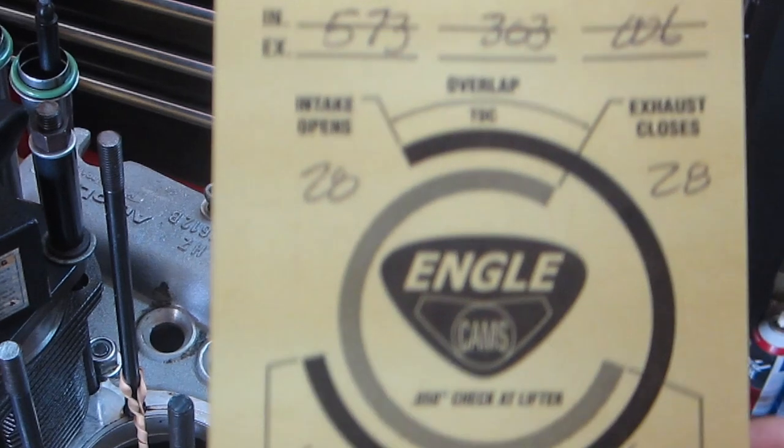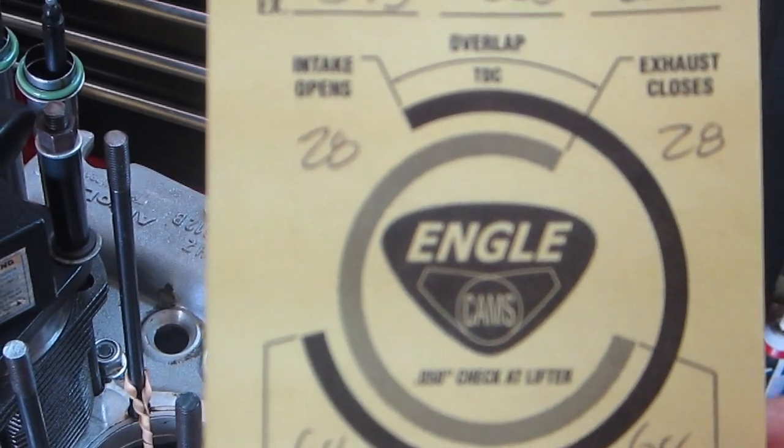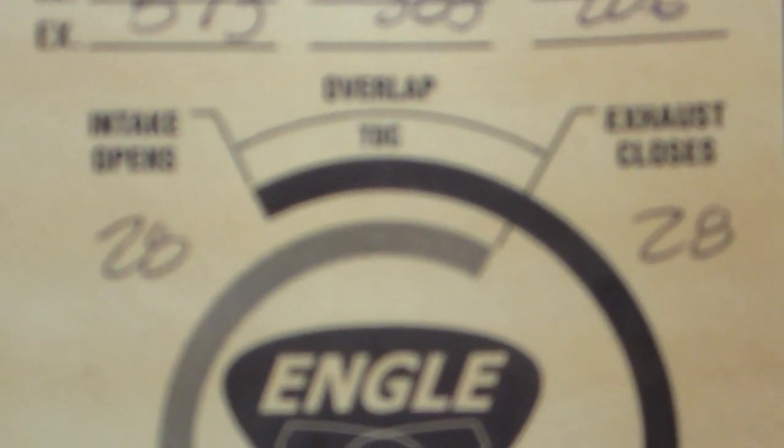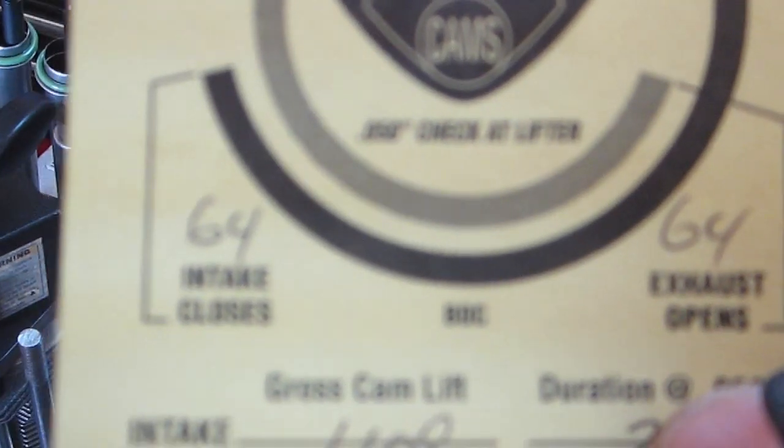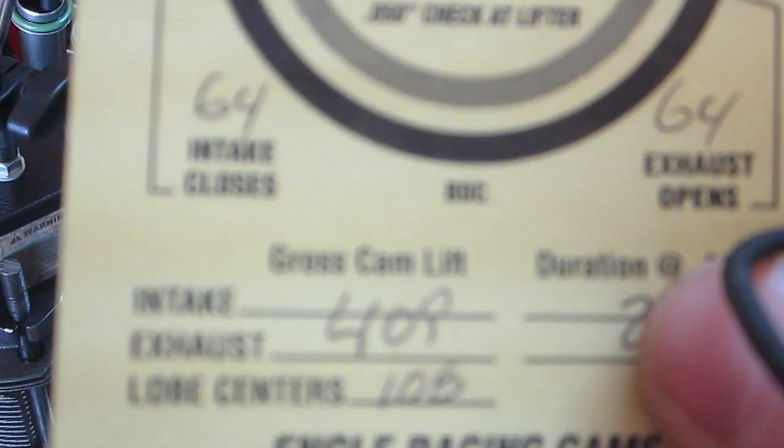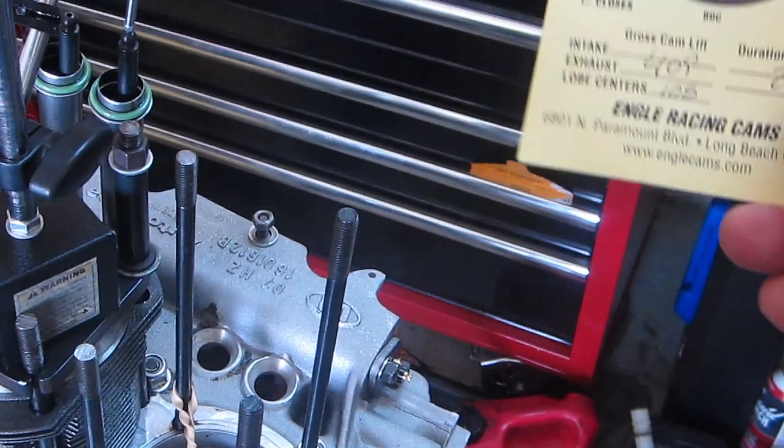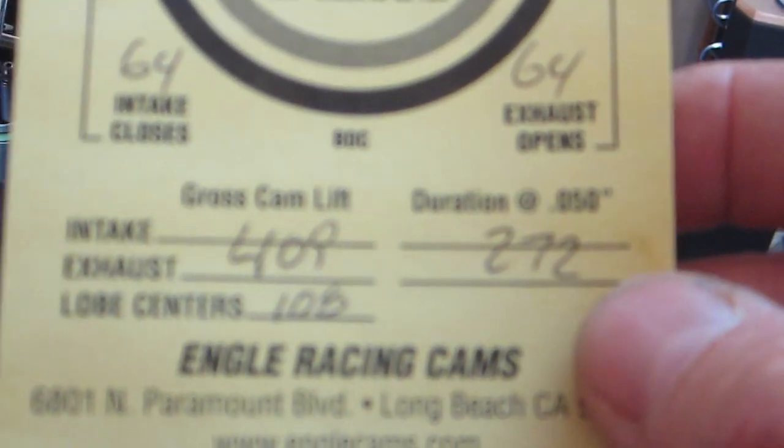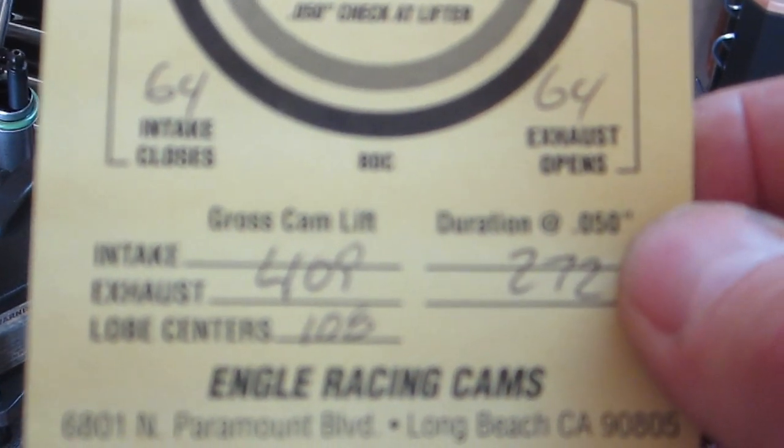The intake is supposed to open at 28 degrees before top dead center, and the intake will close at 64 degrees after bottom dead center. The gross cam lift is 0.409 inches, and duration measured at 0.050 inches checking clearance is 272 degrees.